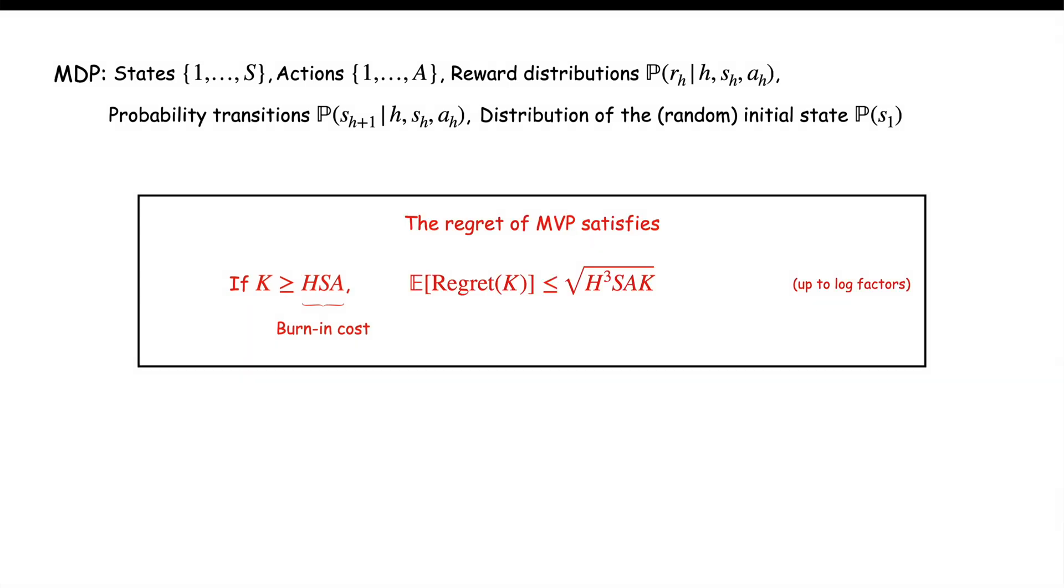The main result of today's paper is that they derived an algorithm called monotonic value propagation or MVP, which achieves the optimal regret while having the optimal burning cost HsA. Precisely, they show that with probability at least 1 minus delta, the regret of MVP is lower than this.